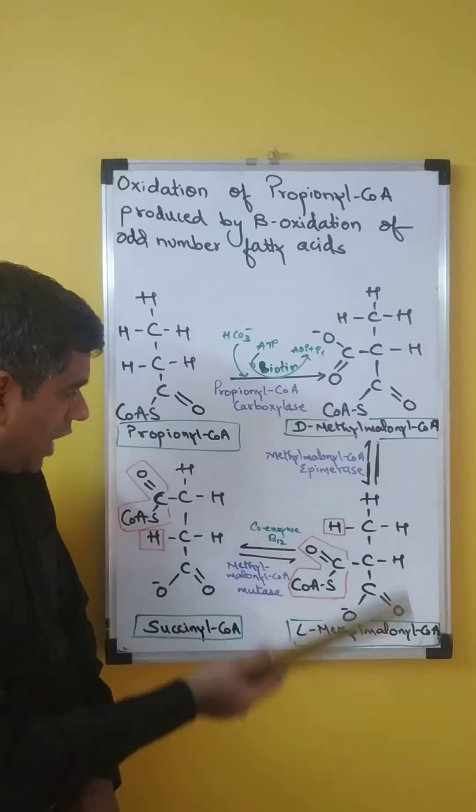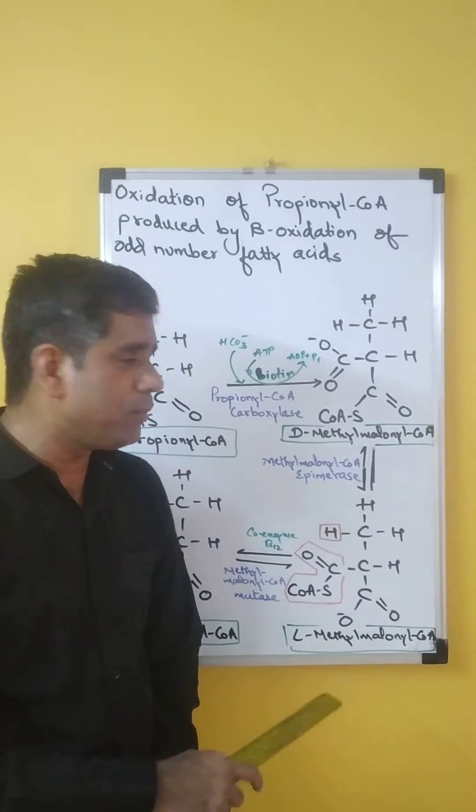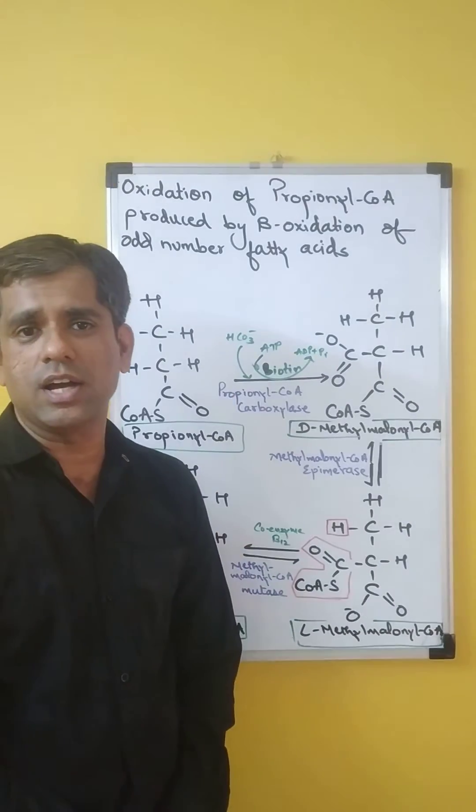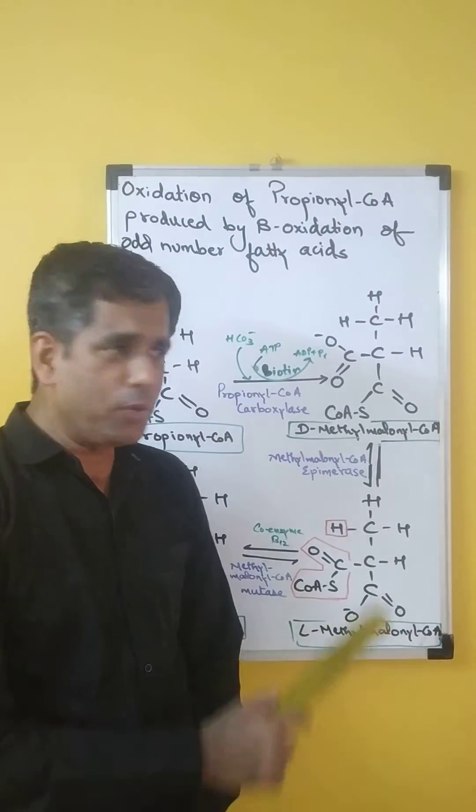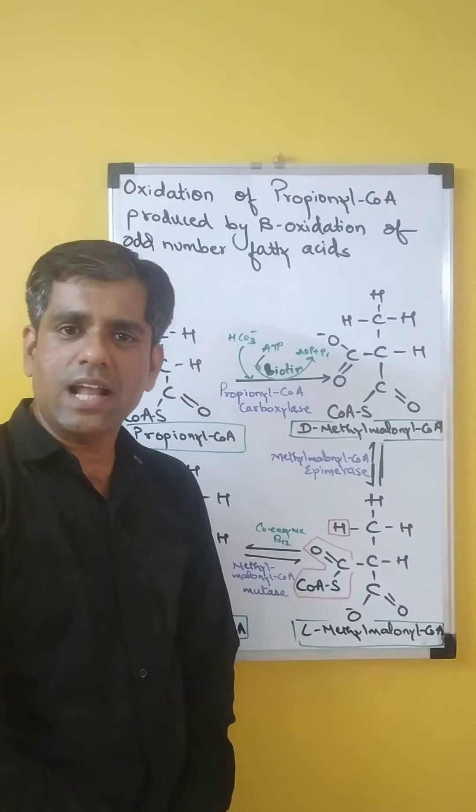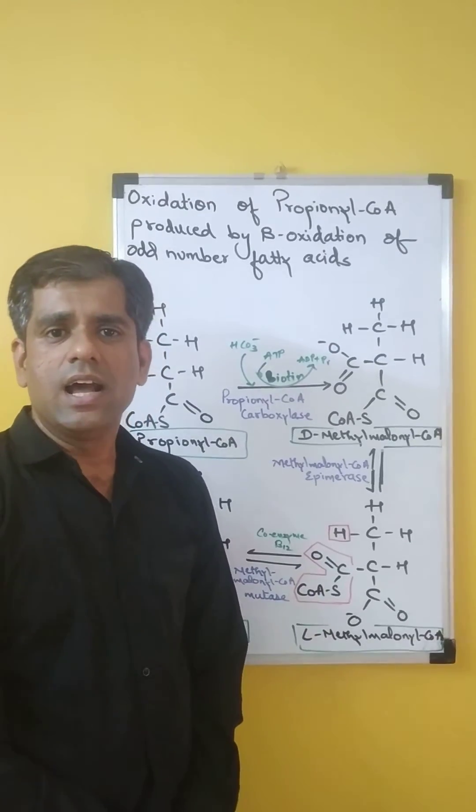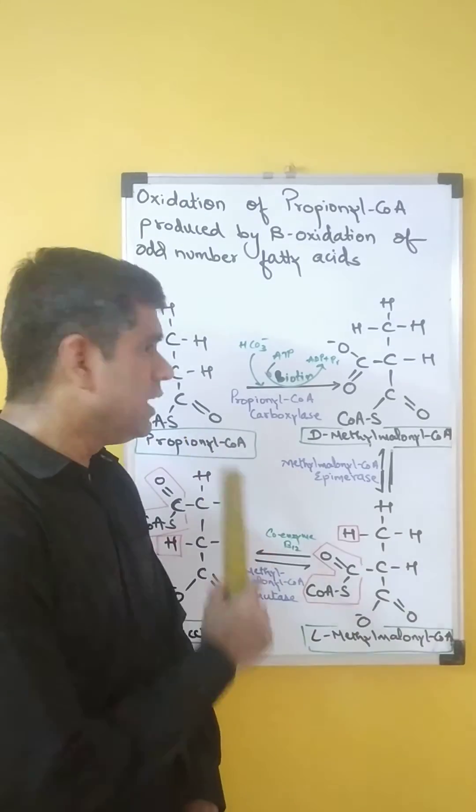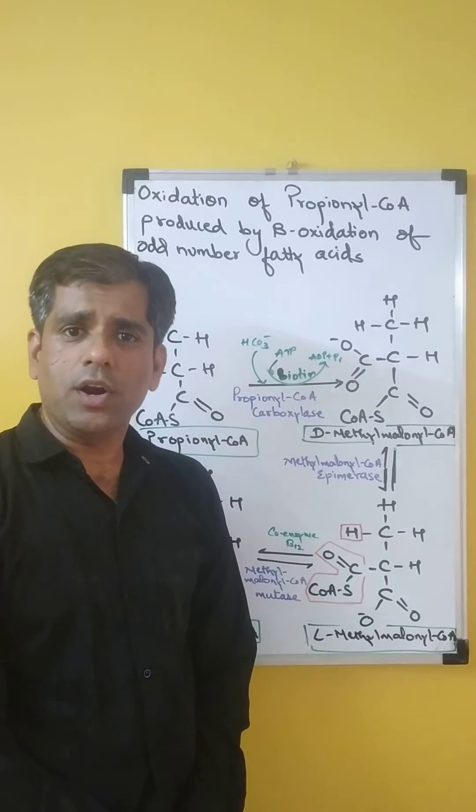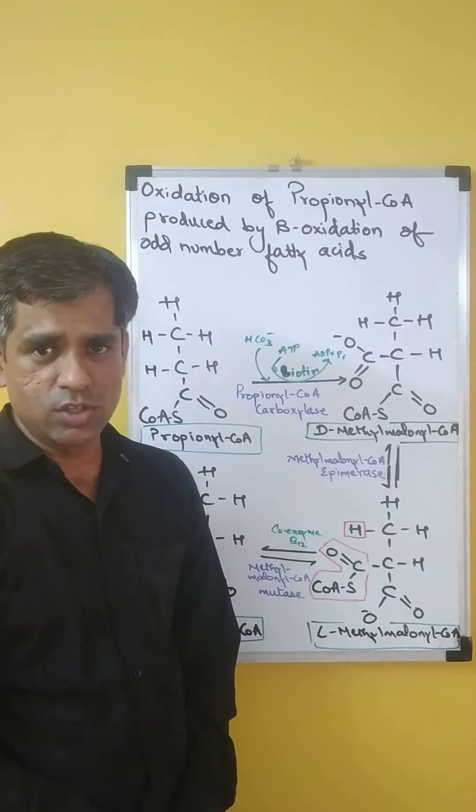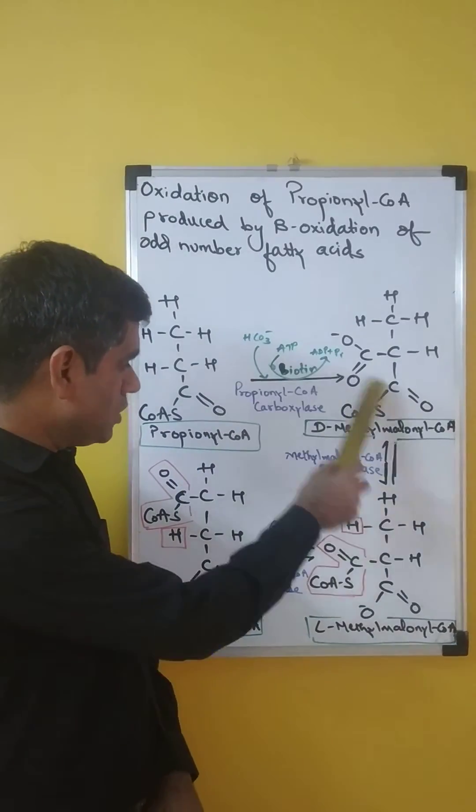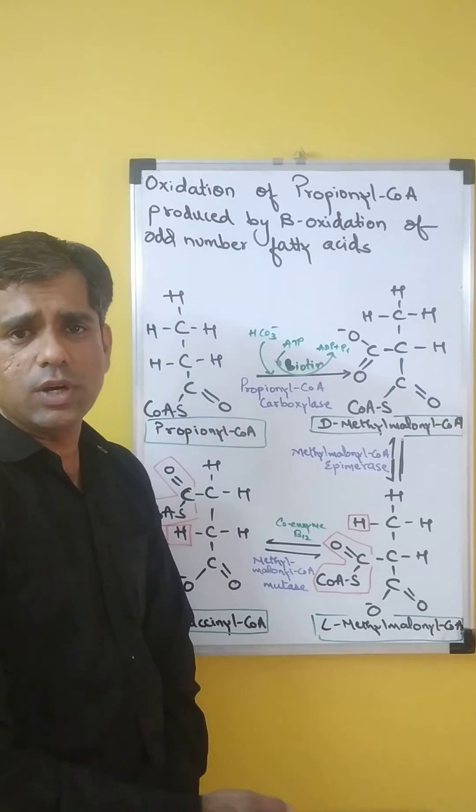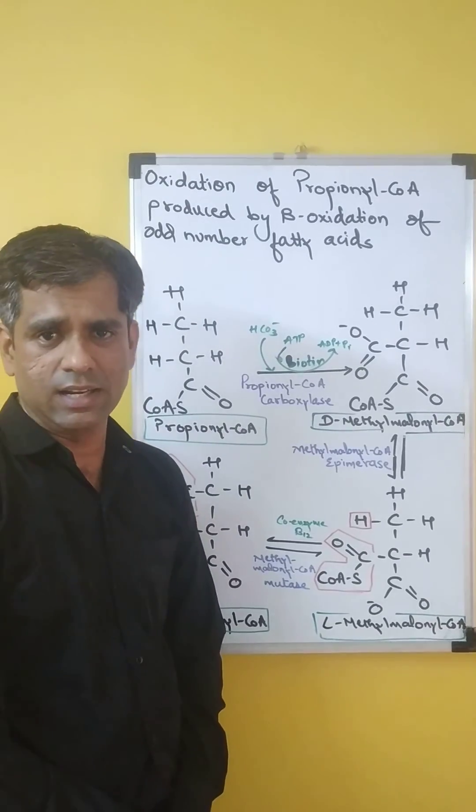Succinyl-CoA now enters the citric acid cycle, completing the process of complete oxidation of this odd number carbon-containing fatty acid. Propionyl-CoA also enters our diet because it is added as an inhibitor of mold in breads and cereals. Propionyl-CoA is also found as a product of fermentation in cattle and other ruminants. This propionyl-CoA undergoes these three enzymatic steps to form succinyl-CoA, which subsequently enters the citric acid cycle. Thank you.